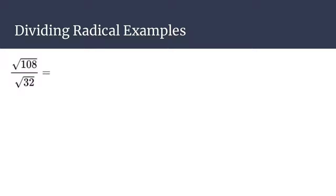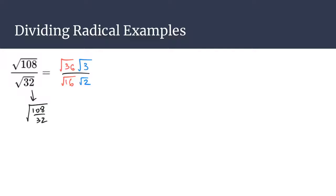Let's take a look at a slightly more complicated example: the square root of 108 divided by the square root of 32. You could change this using the property into the square root of 108 over 32, and then try to reduce it. However, 108 over 32 does not reduce nicely, so we're going to choose a different approach and simplify each part individually. On top you get the square root of 36 times the square root of 3, and on the bottom you get the square root of 16 times the square root of 2.